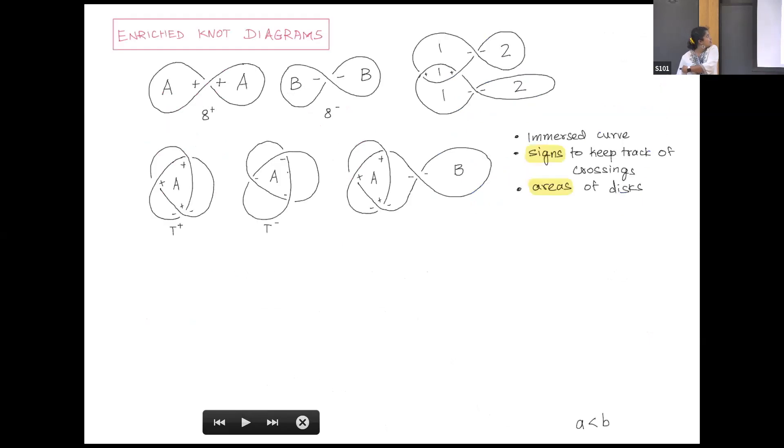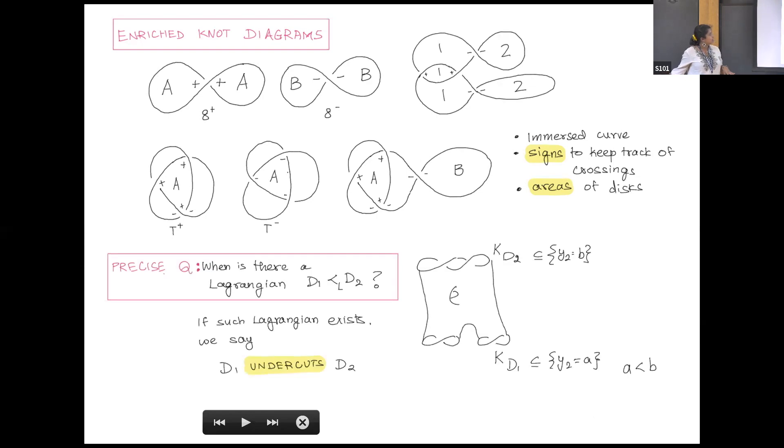If you've done some knot theory, you have knot diagrams, which are usually an immersed curve on your paper. This is called the blackboard framing. We have x1, y1, and the x2 coordinate is pointing outwards. We have these signs to keep track of which crossing it is. The enriched part is I'm also going to keep track of areas of these sectors that this thing cuts out. Here I've drawn it without actual intersections, but those are all intersections. It's just easier to keep track of crossings for me.